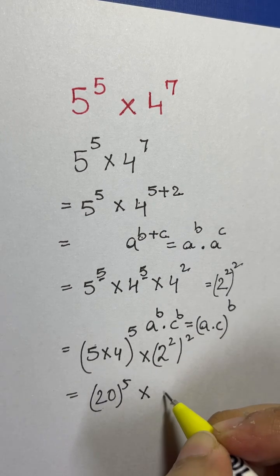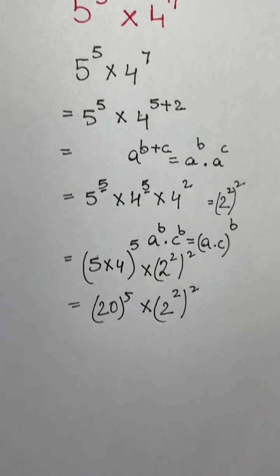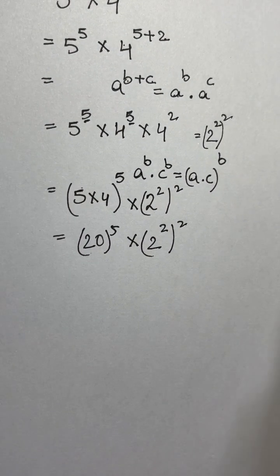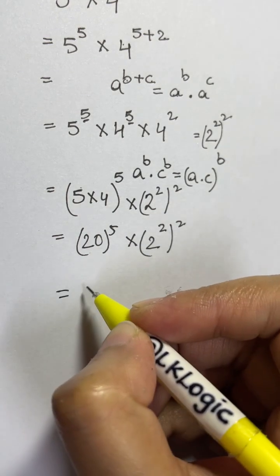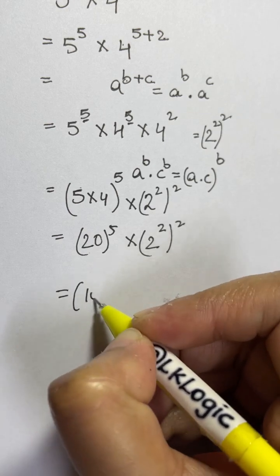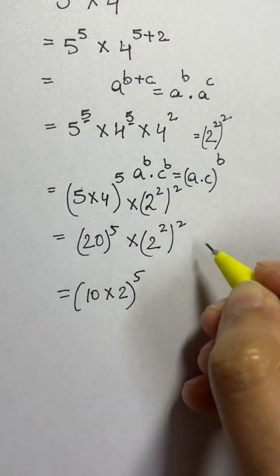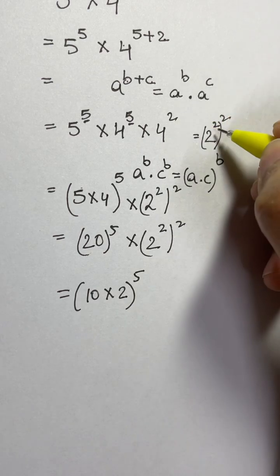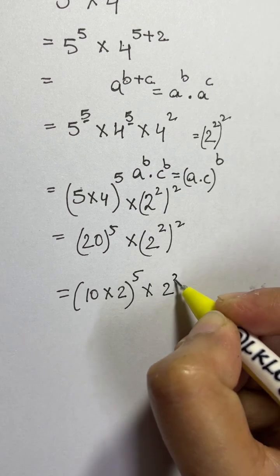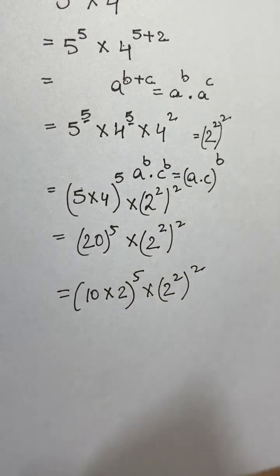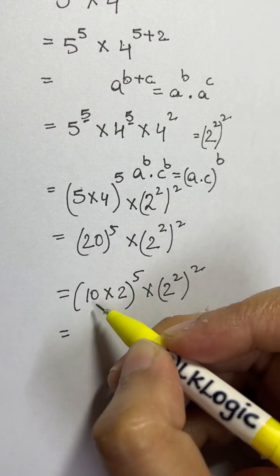Now 20 can be written as 10 times 2, so we rewrite it as (10 times 2) to the power of 5 times (2 squared) whole squared. We have already converted 4 squared to (2 squared) whole squared.